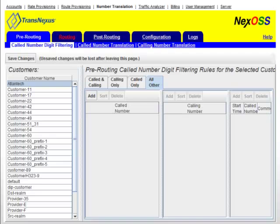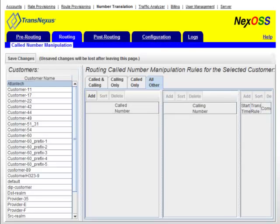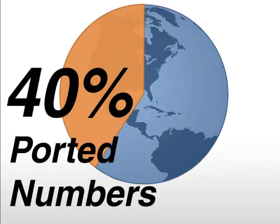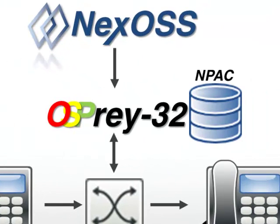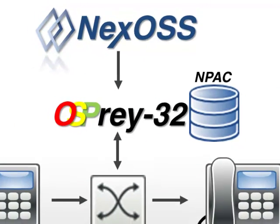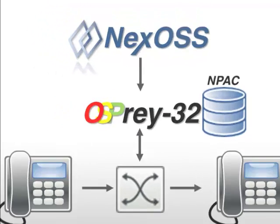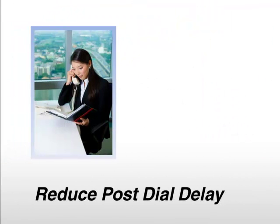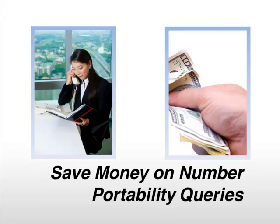In addition, the Osprey Route Server provides excellent number portability correction features. This is a must-have feature since over 40% of all telephone numbers have been ported. Osprey's unique ability to host the North American number portability database with the routing table reduces post-dial delay and saves on number portability query fees.